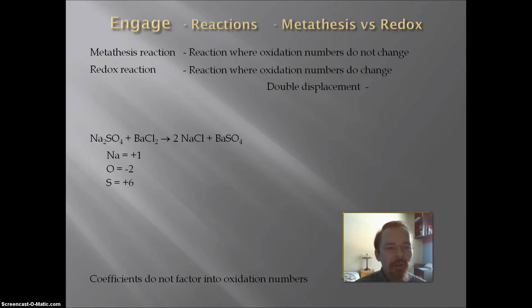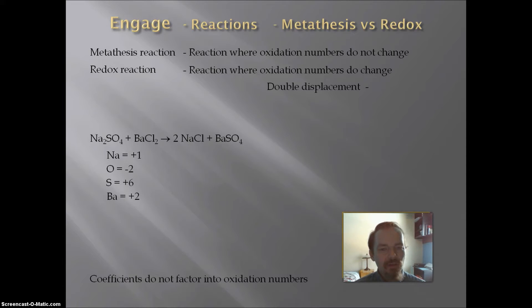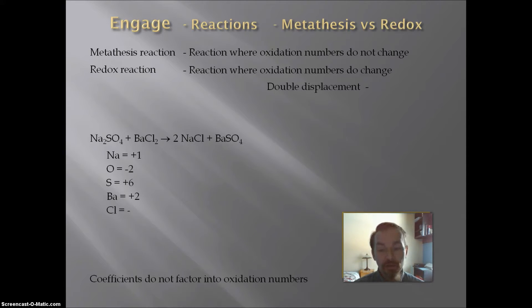In the second reactant, barium chloride, barium is a monatomic ion with a charge of plus 2, so its oxidation number is plus 2. Chloride is a monatomic ion with a charge of minus 1, so its oxidation number is minus 1. Reactants are done — let's go to the products.